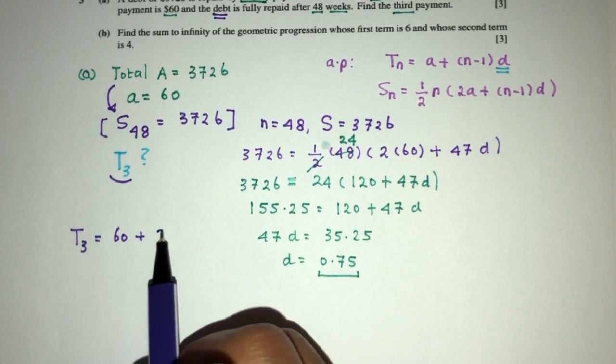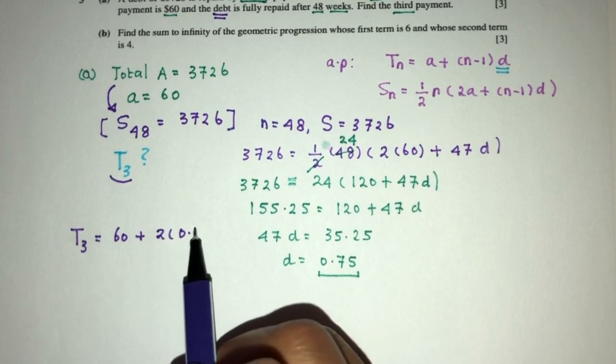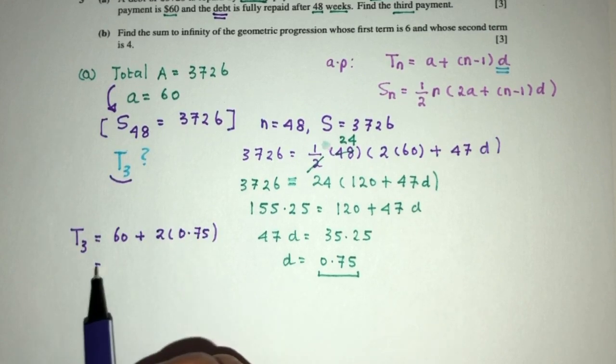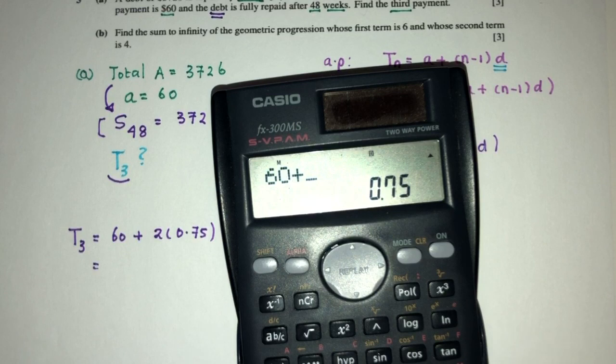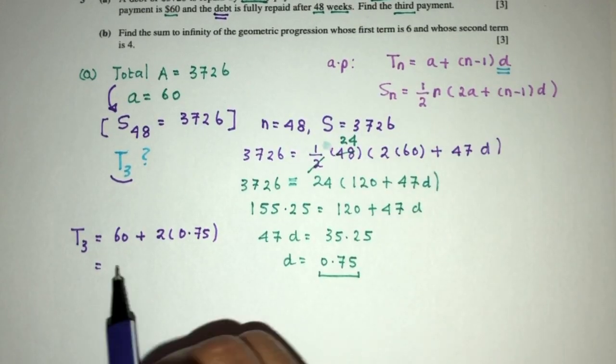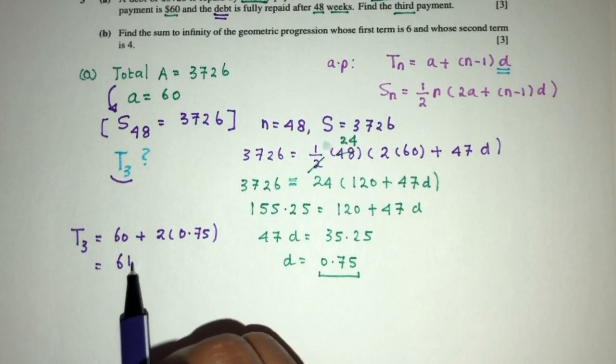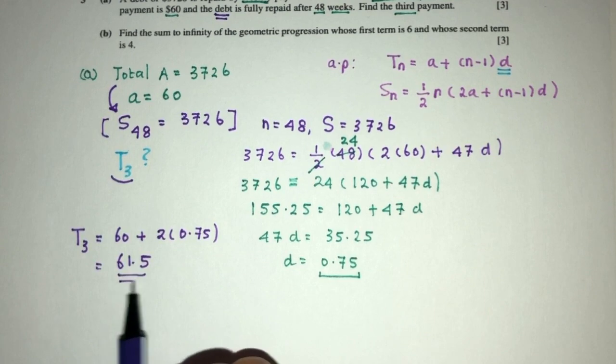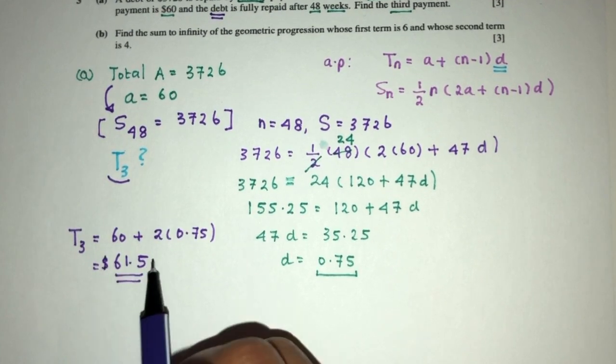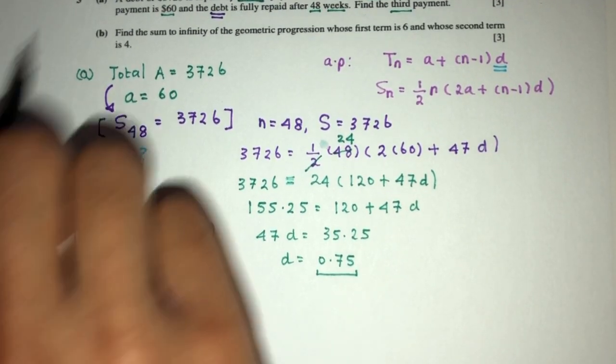A is 60 plus N is 3, third term, minus 1 is 2, times D will be 0.75. So that will be 60 plus 2 times 0.75. That should be 61.5. So this is the third payment, which will be $61.50. That will be part A of the question.